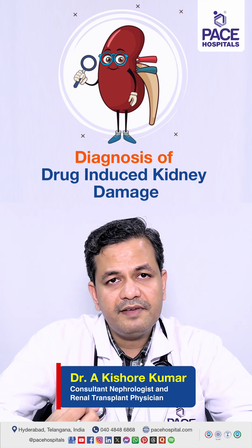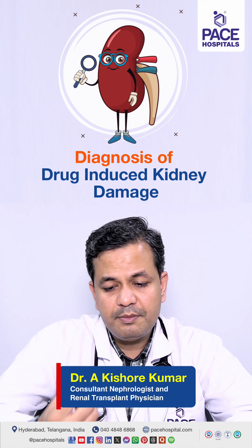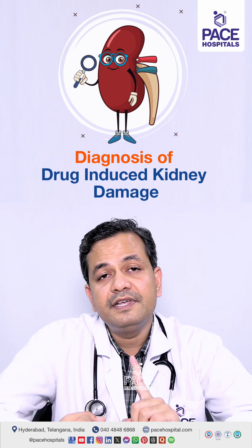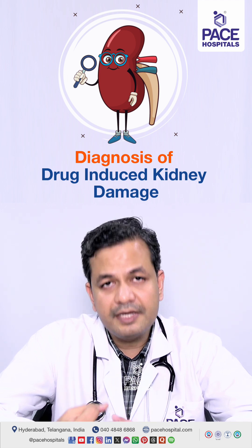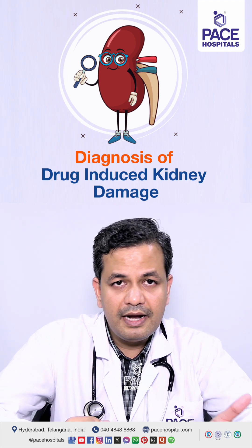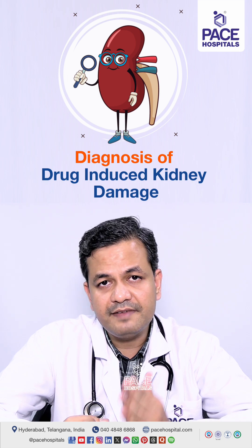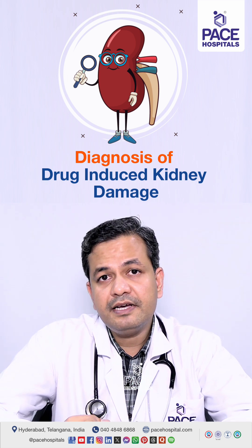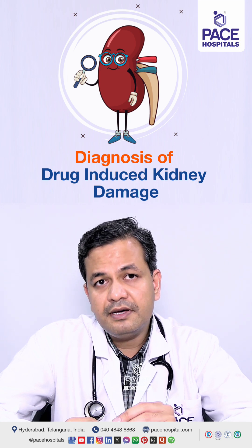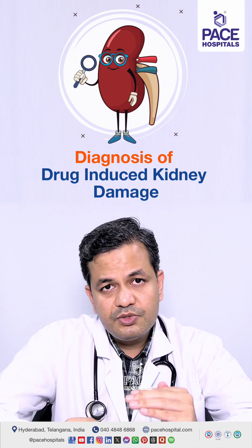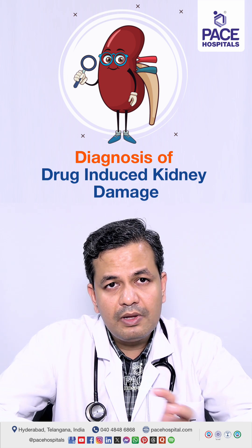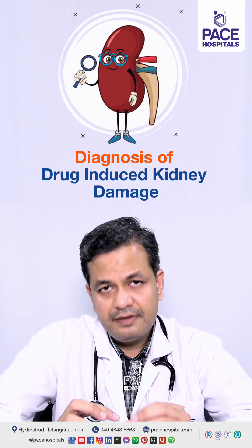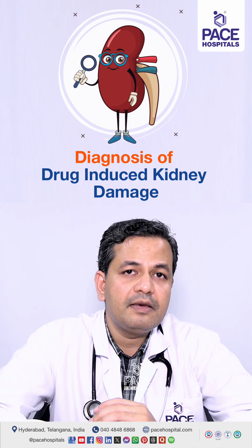If the patient is not having any other illness which can damage the kidney, or if their kidney size is normal, and if their urea and creatinine levels are increased — and if they were previously normal but have increased after starting the drug — then if the patient is taking any drug which can damage the kidney in excess dose or for a longer duration, all these factors are taken together by the nephrologist to identify whether the drug is causing the kidney damage or not.